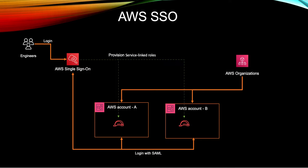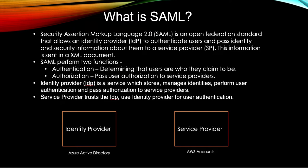For that, AWS SSO uses SAML, and we need a little bit of understanding of how SAML works and what it is. SAML is Security Assertion Markup Language. It is an open federation standard that allows an identity provider to authenticate users and pass identity and security information about those users to a service provider. The identity provider is your Azure Active Directory, which stores all your user information, and the service provider is your AWS accounts — or suppose Salesforce, Asana, or any application you may integrate with AWS SSO.